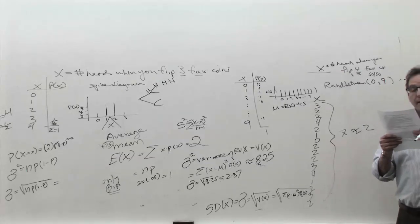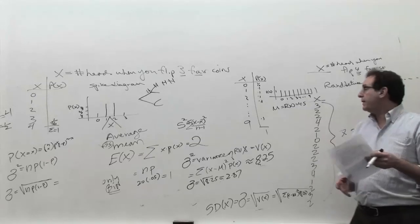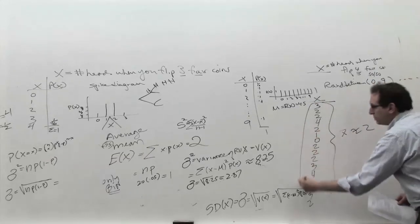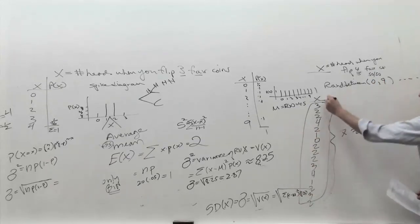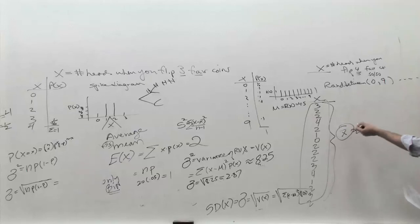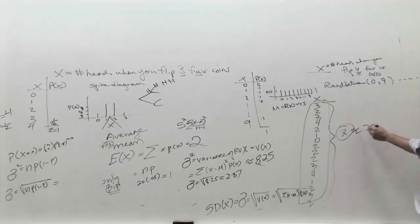Finally, when you do the 8,000 flips of the coin, actually get the average by telling Excel to give you the average, and make sure it comes out to something pretty close to two. And we'll stop right there.